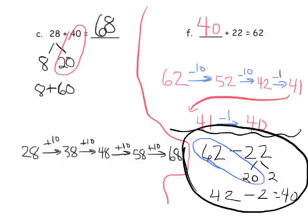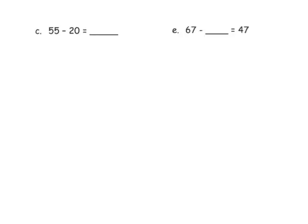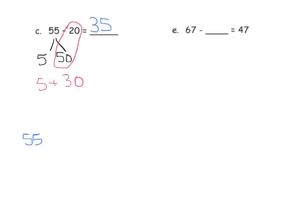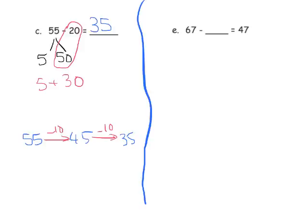This is not explicitly taught in this lesson, but you're welcome to show students if they're curious. Our last examples: for 55 minus 20, let's use the number bond first — 55 breaks into 5 plus 50, and 50 minus 20 gives us 30, plus our original 5 means the answer is 35. With the arrow method: 55 minus 10 gives us 45, minus another 10 gives us 35. Both methods give us 35.